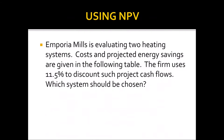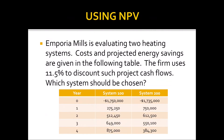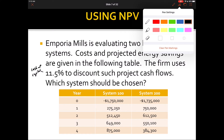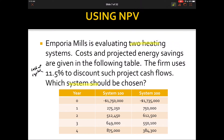Let's do an example with net present value. Emporia Mills is evaluating two heating systems. The costs and projected energy savings are given in a table. The firm uses 11.5% to discount project cash flows — this is the cost of capital, the minimum required rate of return. Since we are choosing only one system, this is a mutually exclusive project situation. We will calculate the net present value by taking all cash flows and listing them to solve for the total present value.